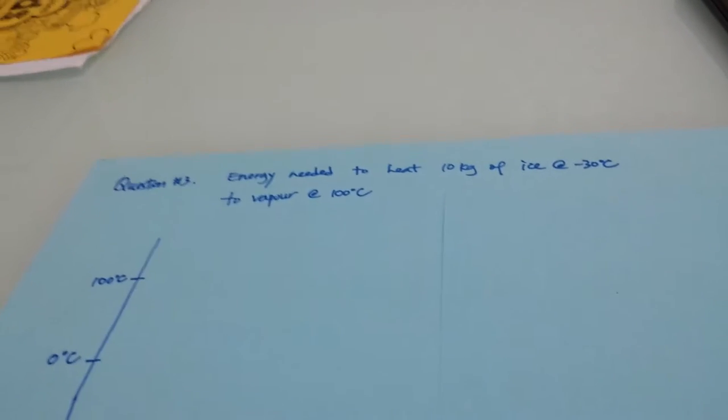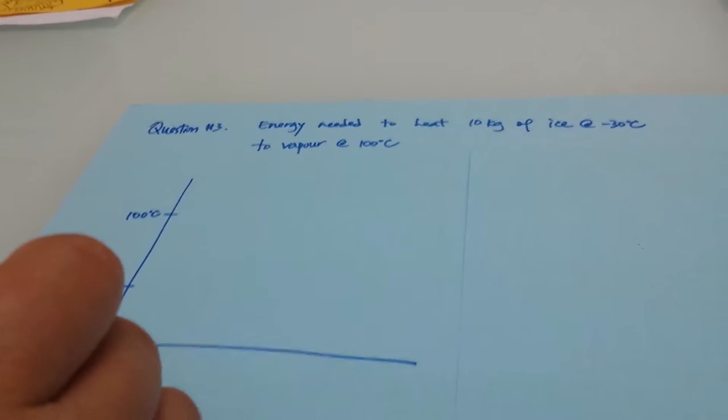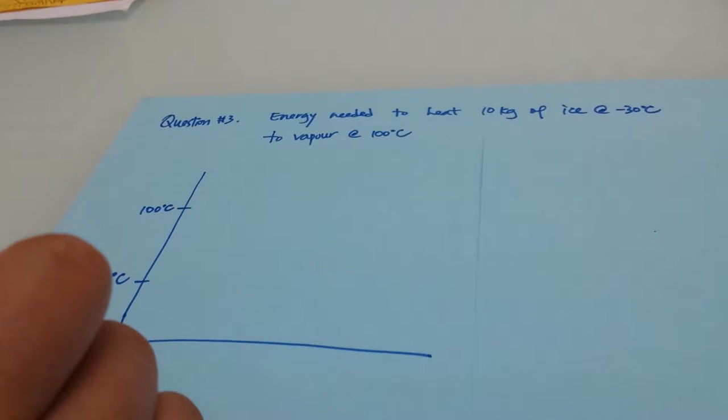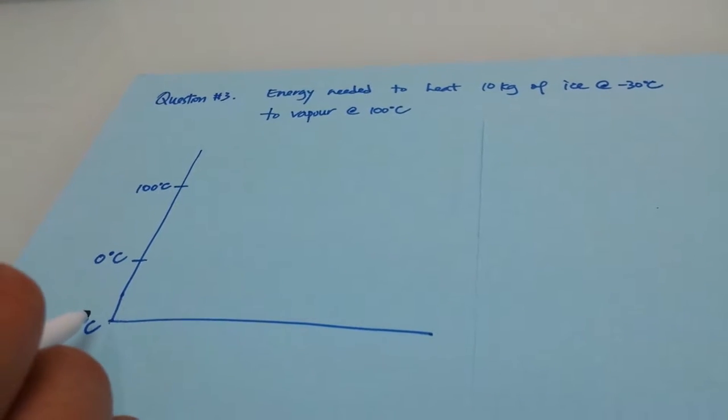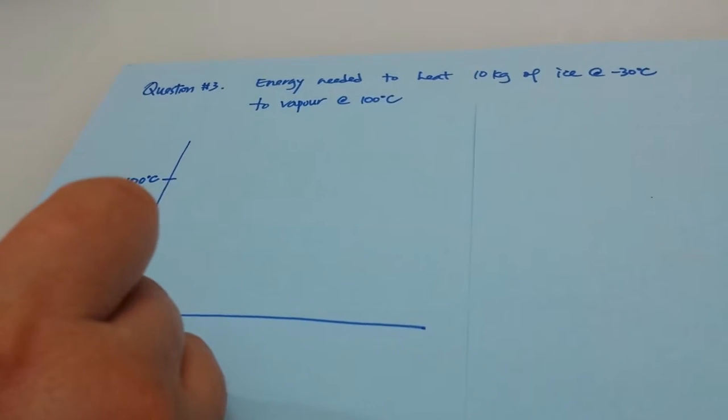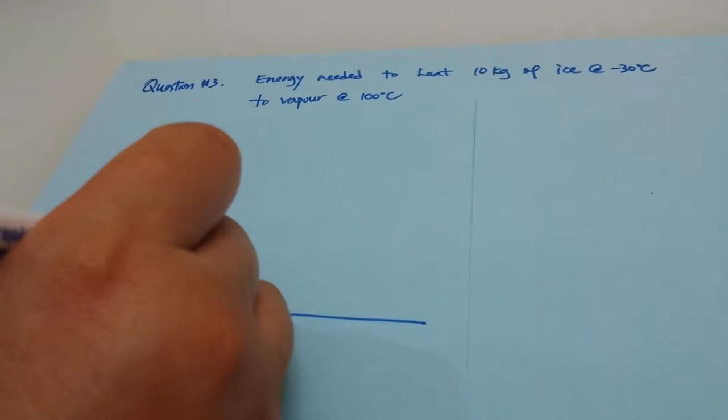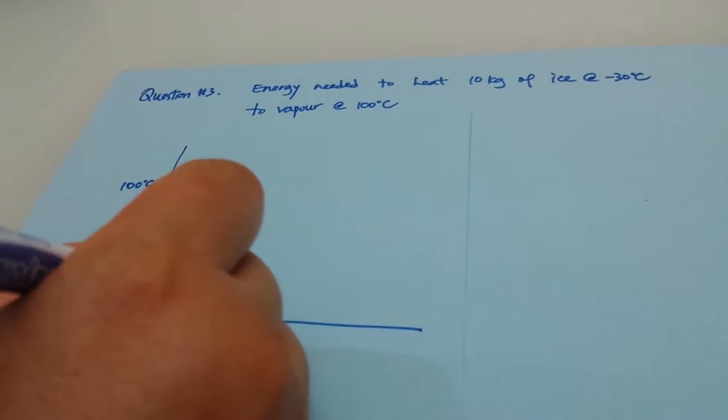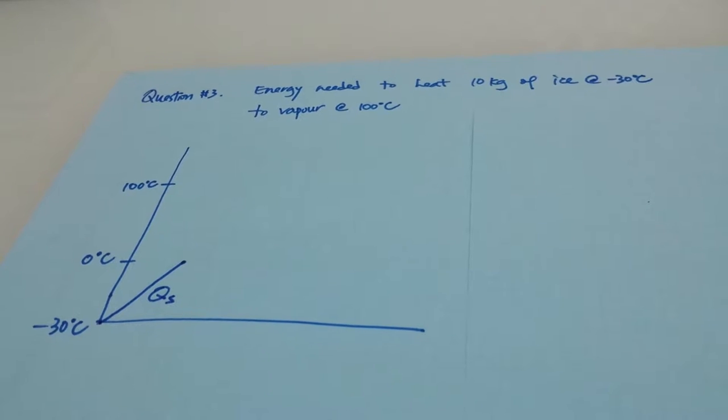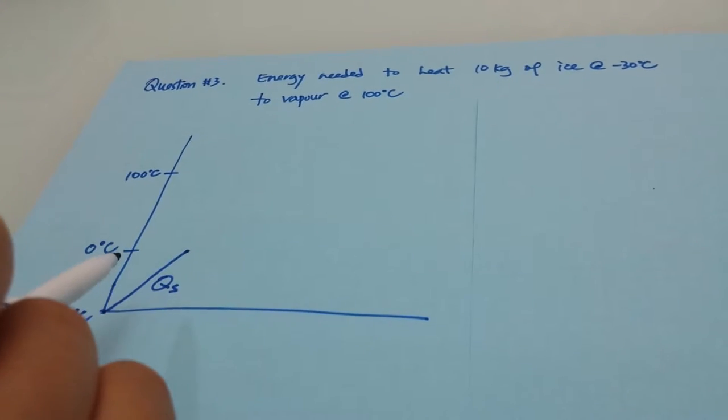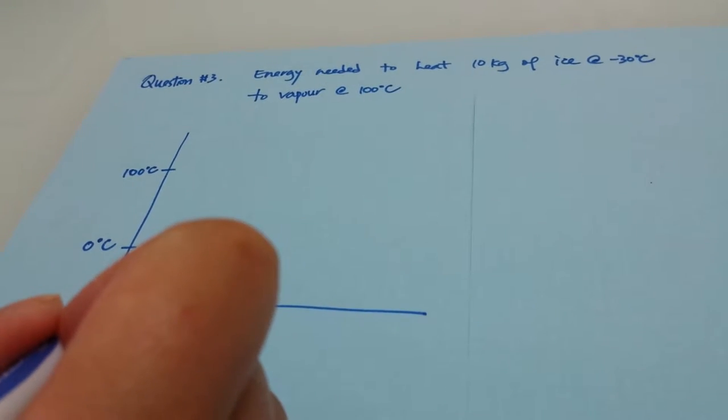So the ice is starting here at negative 30 degrees Celsius. And we are going to add sensible heat to it. Starting from negative 30 degrees Celsius, we are heating it all the way up here. So that's the heat we need to heat it to 0 degrees Celsius.